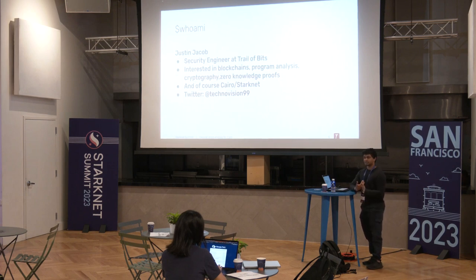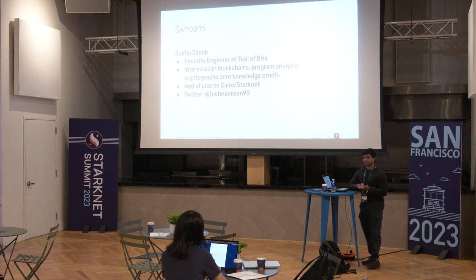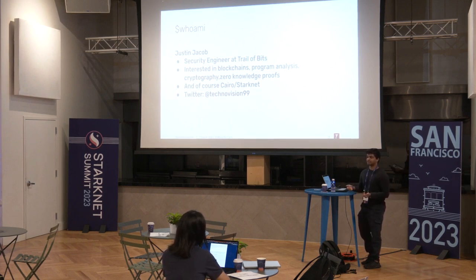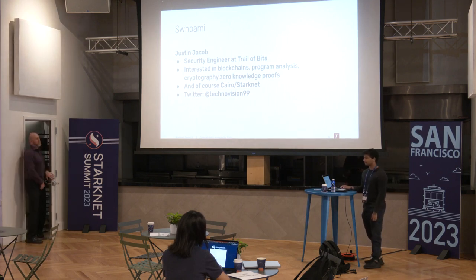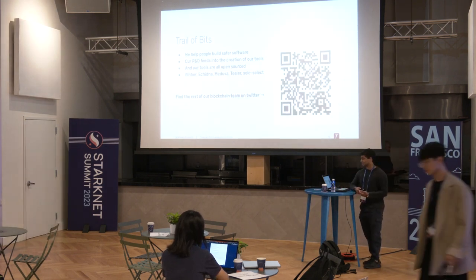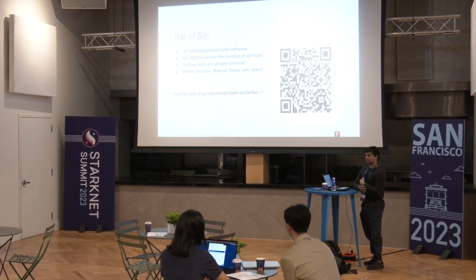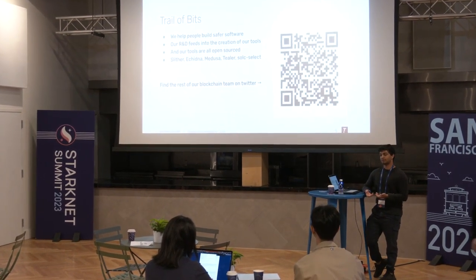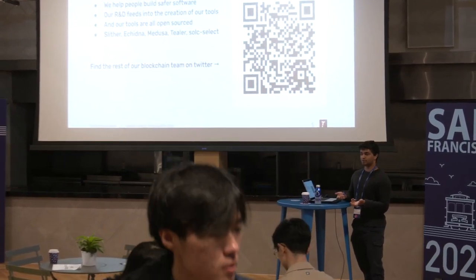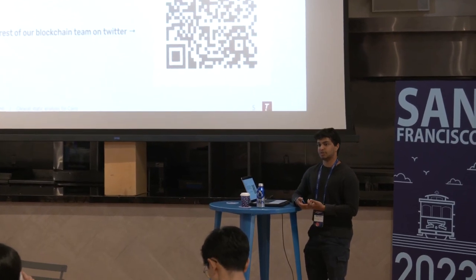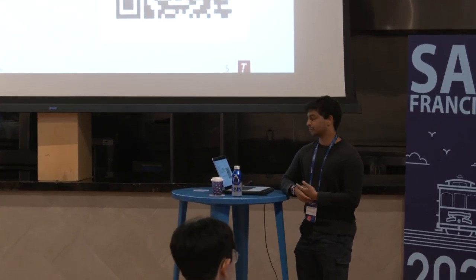My name is Justin. I'm a security engineer at Trail of Bits, although this badge says Starkware. My interests are blockchains, program analysis, cryptography, zero-knowledge proofs — pretty much everything that comes out of the blockchain space — and obviously Cairo and StarkNet as well. There's my Twitter if you want to connect. Trail of Bits helps people build safer, more secure software. We do a lot of research and development, which leads us to build and open source our own tools. In the blockchain space, some of our tools are fairly popular — you might have heard of Slither, Echidna, Medusa, and Teeler.